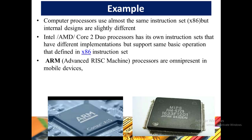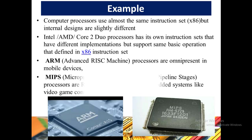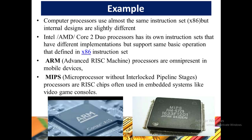ARM — Advanced RISC Machine — processors are omnipresent in mobile devices like Android and iOS. MIPS — Microprocessor without Interlocked Pipeline Stages — processors are RISC chips often used in embedded systems like video game consoles, high-definition editing consoles, and graphic design applications.